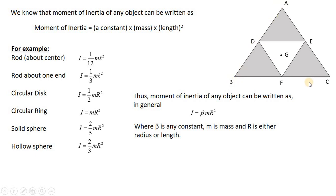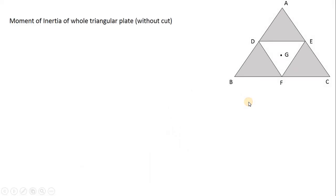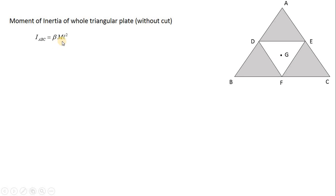Therefore, for this equilateral triangle, we write the moment of inertia of the whole triangular plate — when DEF has not been cut — as β·m·l², where we do not need to compute β explicitly for the JEE exam, and l is the side length (BC, AB, or AC). This is given in the question as I₀.